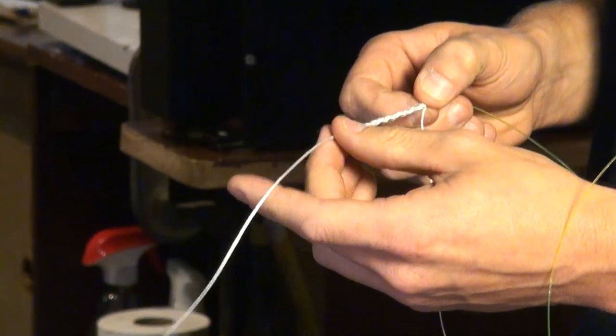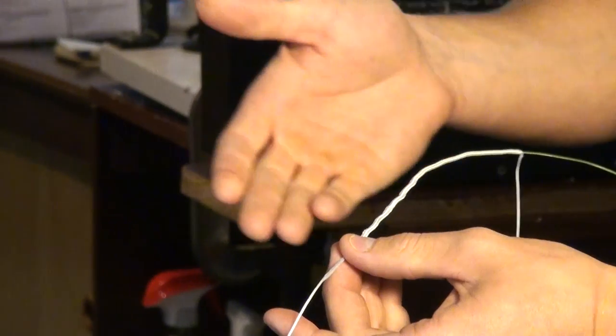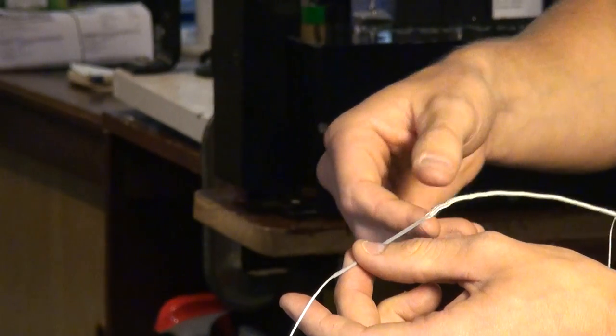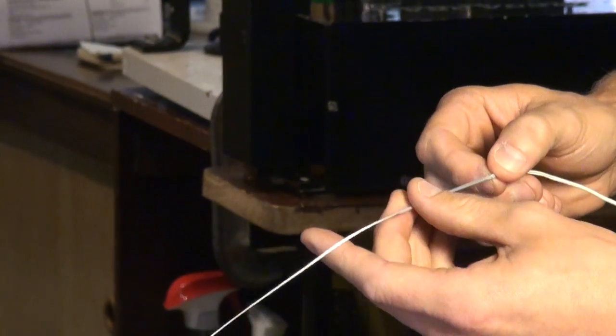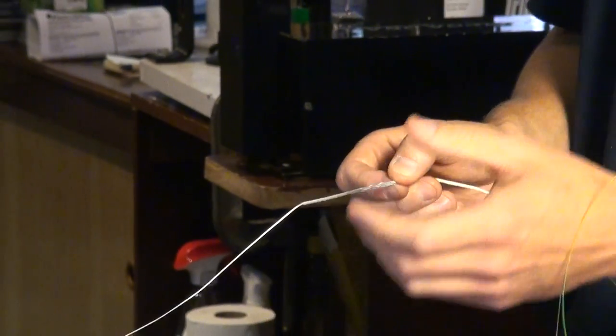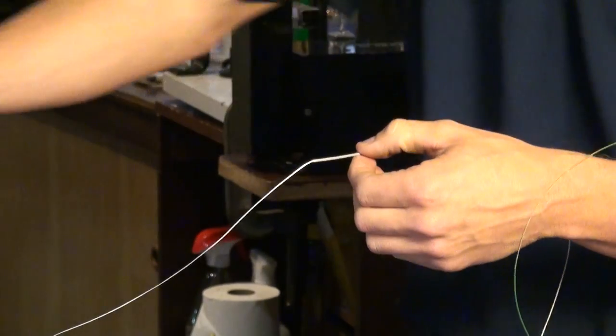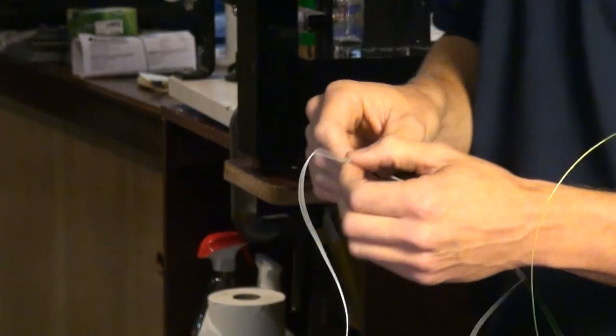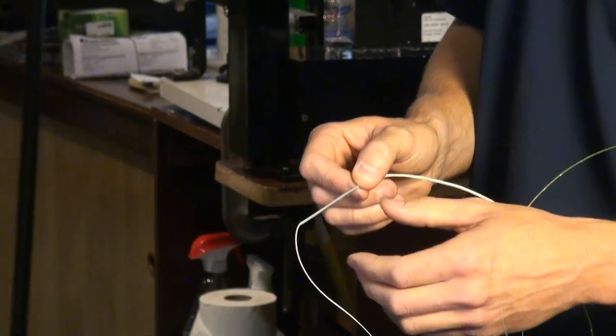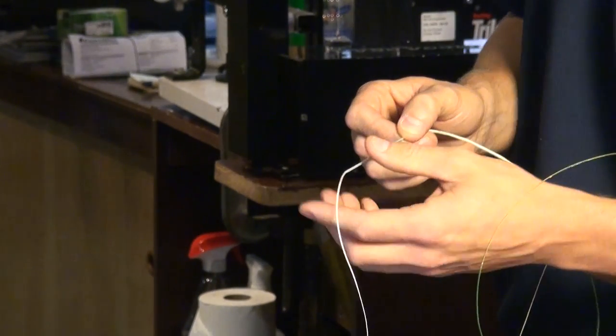I personally like to actually feed the monofilament up into the hollow core about two and a half feet. Now, with the old methods of serving with wax floss, we needed to go that far. But now with some of the more modern serving techniques we're using, we actually don't need to go that far.